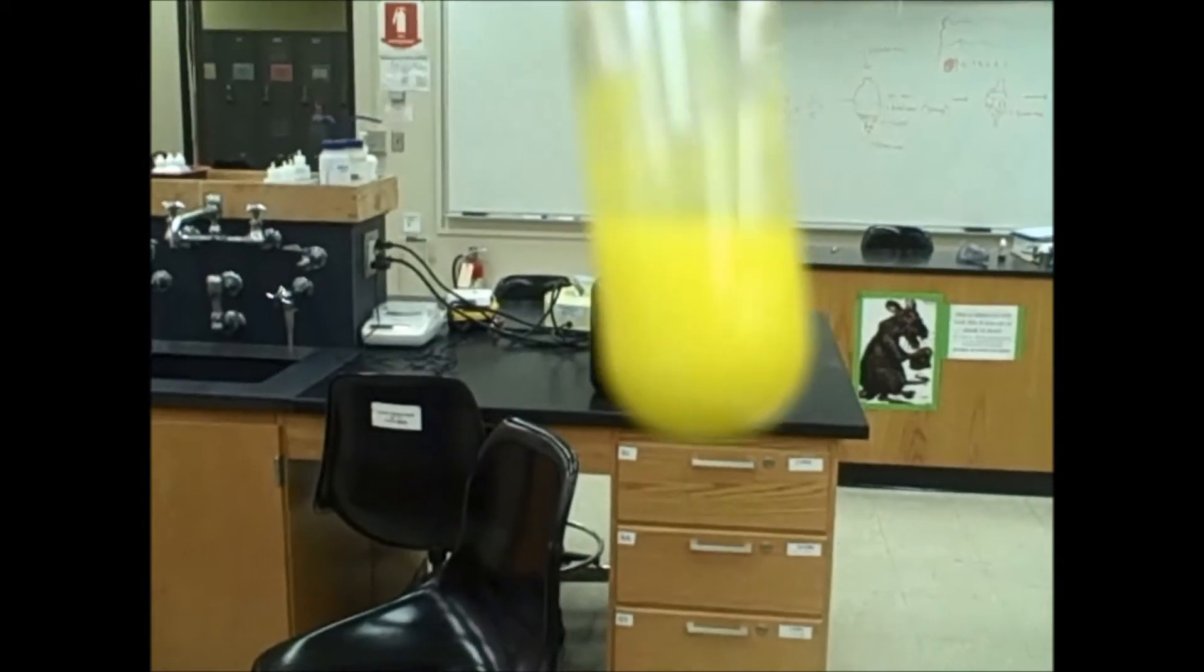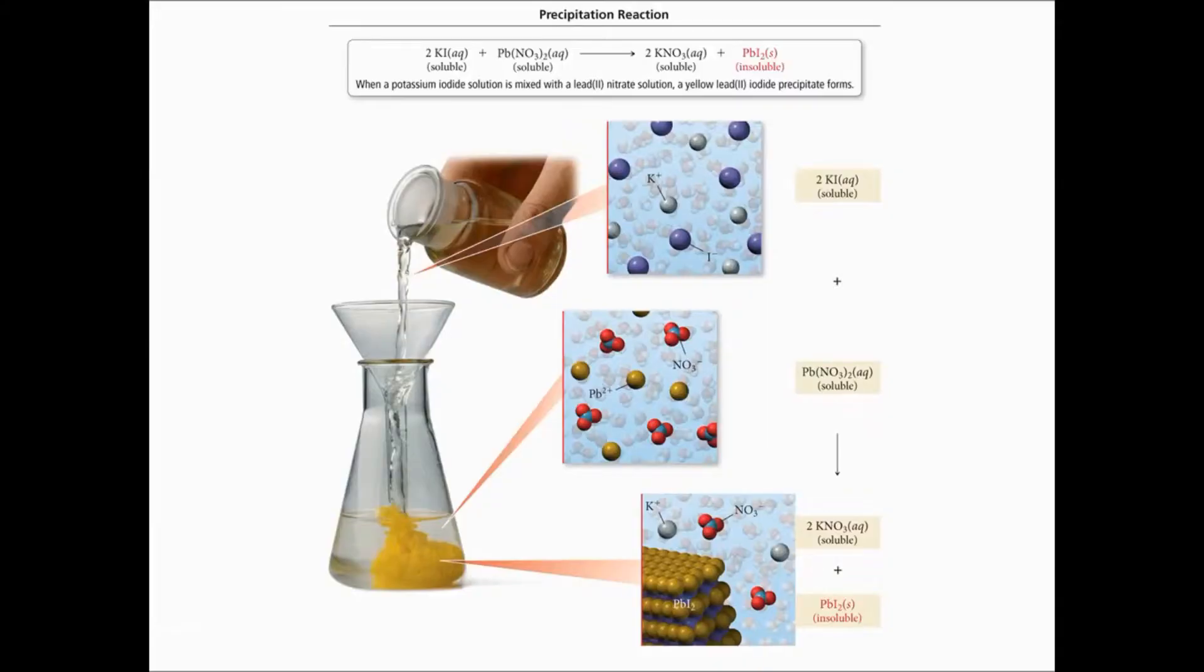You should be aware that in this case, all three of the original solutions were colorless. So the yellow color was not the product of anything from the lead 2 nitrate forming a color in itself. Let's look at these figures.